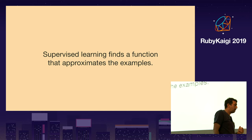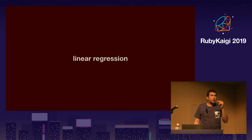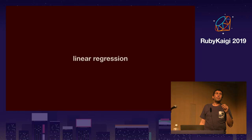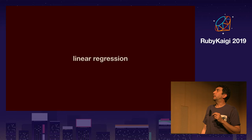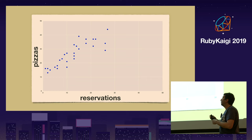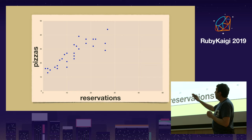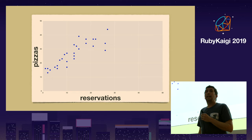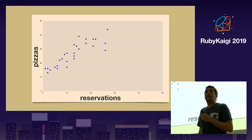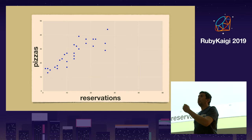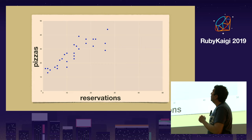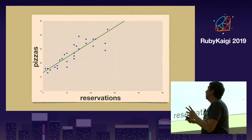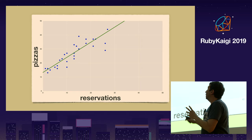Let's look at an especially simple case called linear regression. Say I have a restaurant and I collect reservations in the afternoon, then sell a certain number of pizzas at night. I get these examples collected, and I want a system that forecasts the pizzas — how many I'm likely to sell based on a certain number of reservations. This is a lucky situation because these dots are arranged roughly in a line, so I can use a line to approximate them.